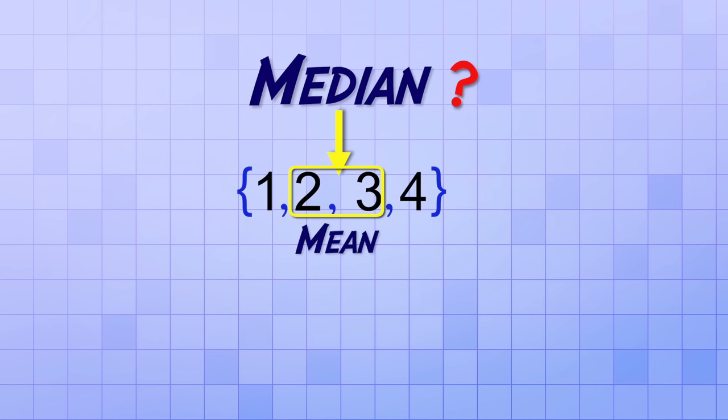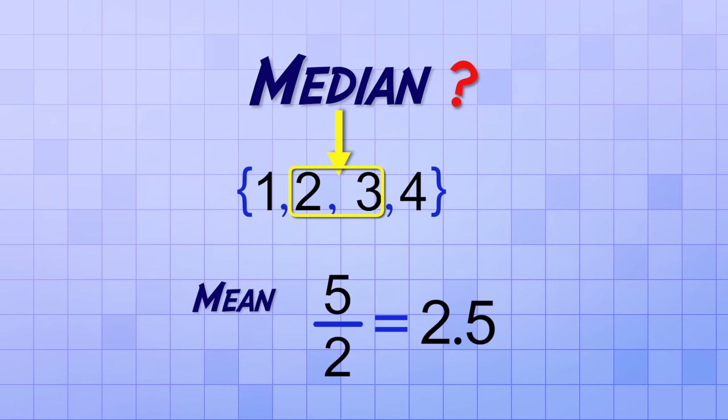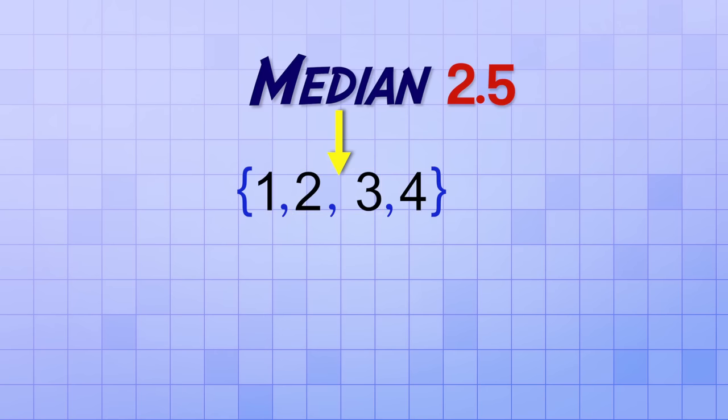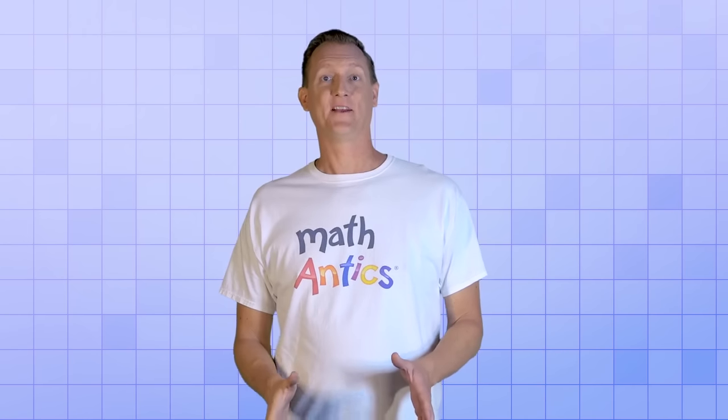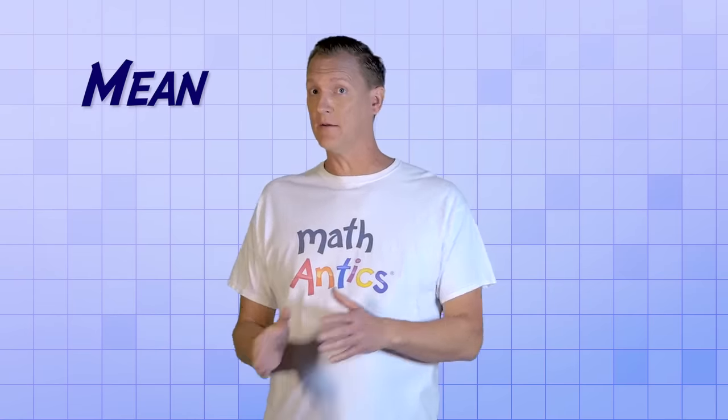For example, in the set 1, 2, 3, 4, we need to take the middle two numbers and find the mean of those numbers. We can do that by adding 2 and 3 and then dividing by 2. 2 plus 3 equals 5 and 5 divided by 2 is 2.5. So the median of the dataset is 2.5. Even though the number 2.5 isn't actually a member of the dataset, it's the median because it represents the middle of the dataset and it splits the members into two equally sized groups. Ok, so now you know the difference between mean and median.